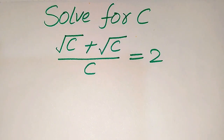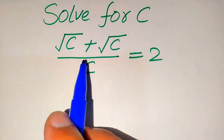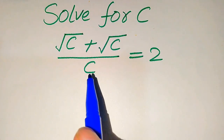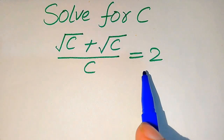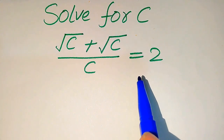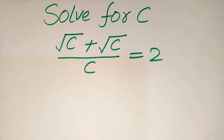Hello everyone. How to solve this problem for the values of C: if we have the square root of C plus square root of C divided by C equals 2, we solve this problem for all the values of C. First we find all the roots of this equation, and at the end we will verify which of the roots are solutions and which are extraneous roots.